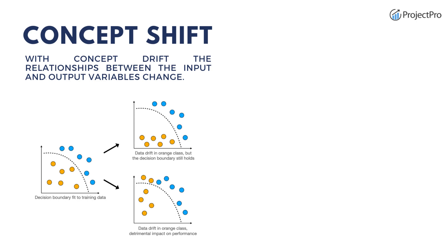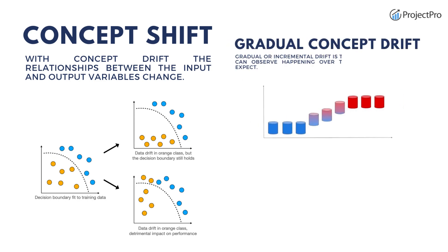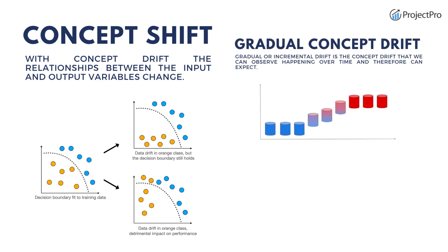Concept shift can be categorized into three categories. The first is gradual concept shift, which happens when there is a gradual or incremental change over time. Our model degrades over time because of changes in consumer data or behavior. For example, when someone launches an alternate product, the model does not know the behavior of that unknown product. There might also be economic changes, like a change in interest rates that causes more customers to default on their loans. These are types of gradual concept shift.